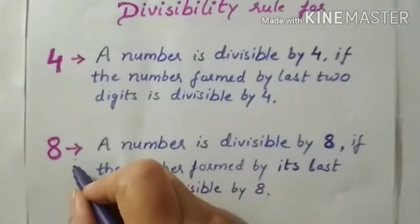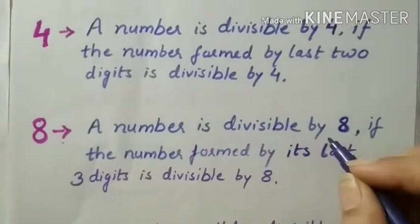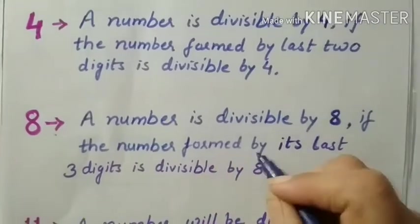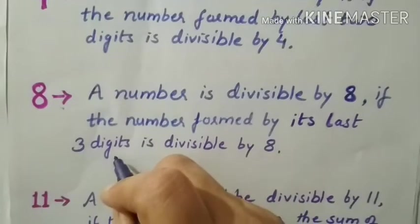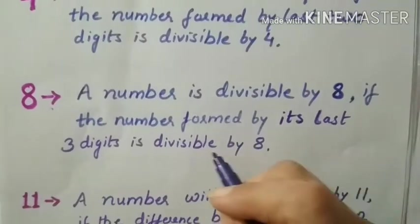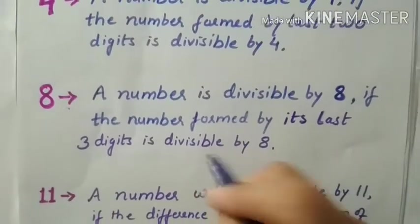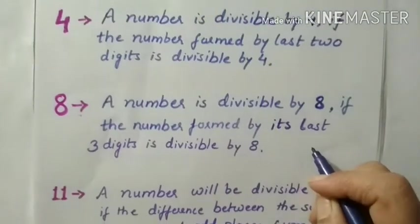Next is divisibility rule for 8. A number is divisible by 8 if a number formed by its last 3 digits is divisible by 8. If the last 3 digits is divisible by 8, then whole number will be divisible by 8.